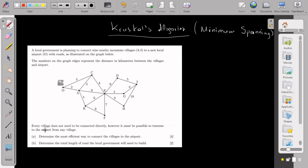Every village does not need to be connected directly - very important. However, it must be possible to travel to the airport from any other village. This information tells us basically to calculate the minimum spanning tree. Determine the most efficient way to connect the villages to the airport.